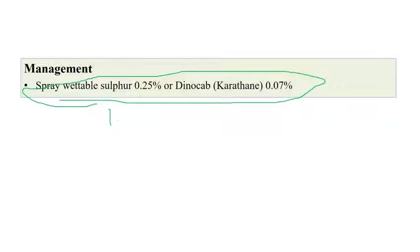For newer management practices, whatever the crop, if you observe powdery mildew, the first step is spraying of water. Before the powdery mildew inoculates and enters the host tissues, in the initial stages, spraying water will wash it away. So the first management practice is spraying of water. If it cannot be controlled even after spraying water, the next step is spraying of one percent milk solution.